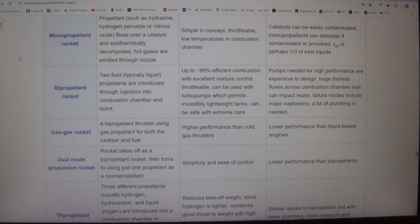Dual mode propulsion rocket - rocket takes off as a bipropellant rocket, then turns to using just one propellant as a monopropellant. Simplicity and ease of control.